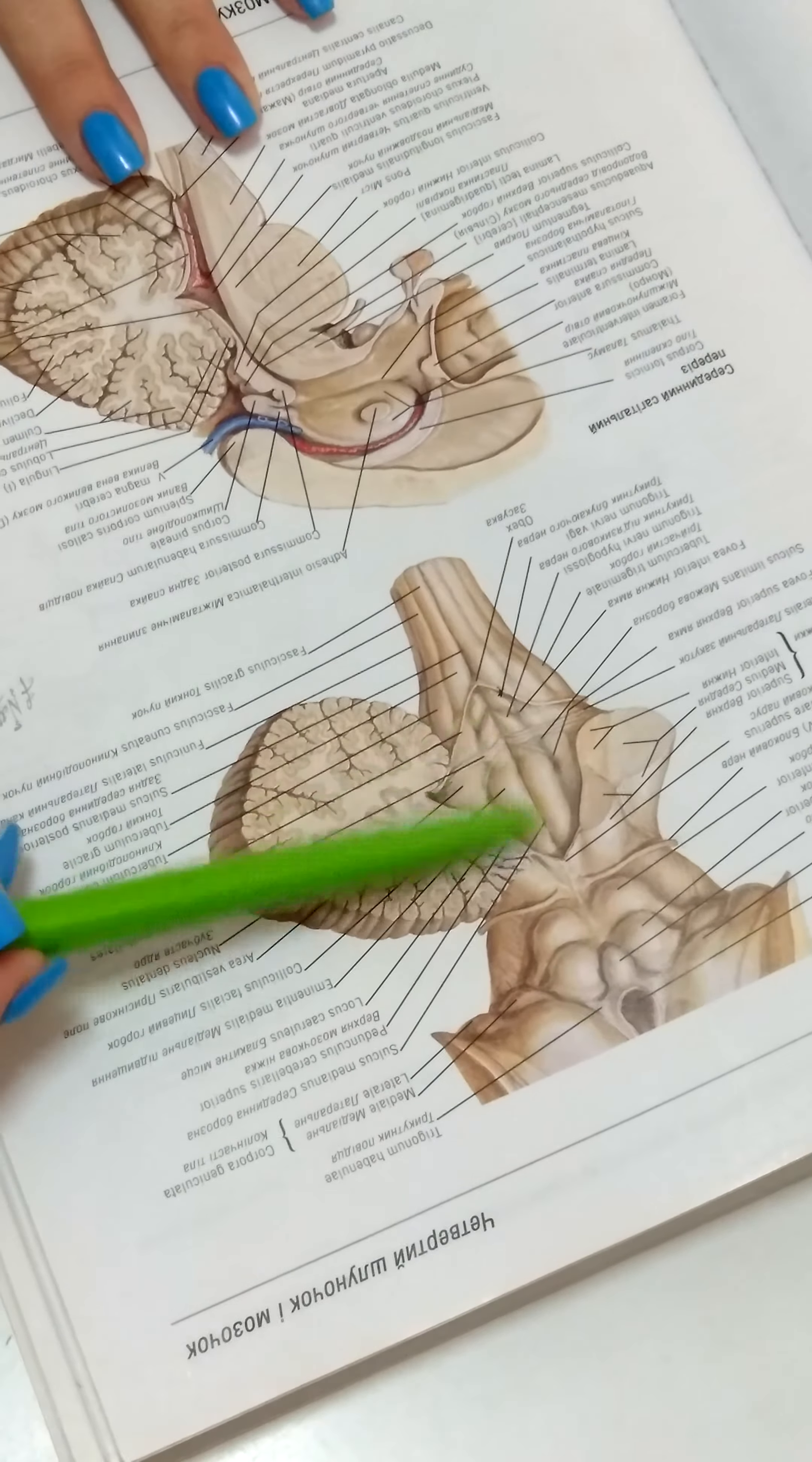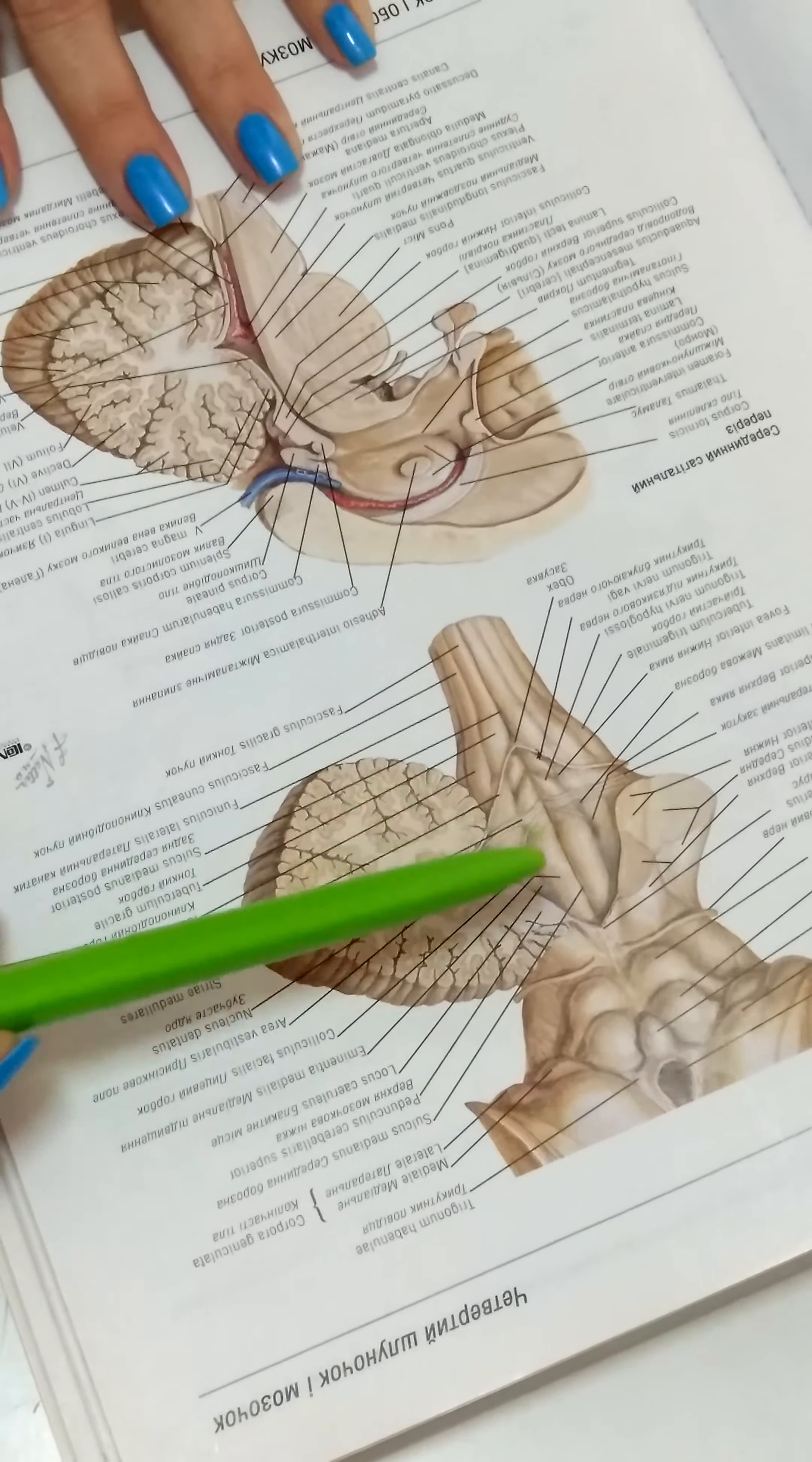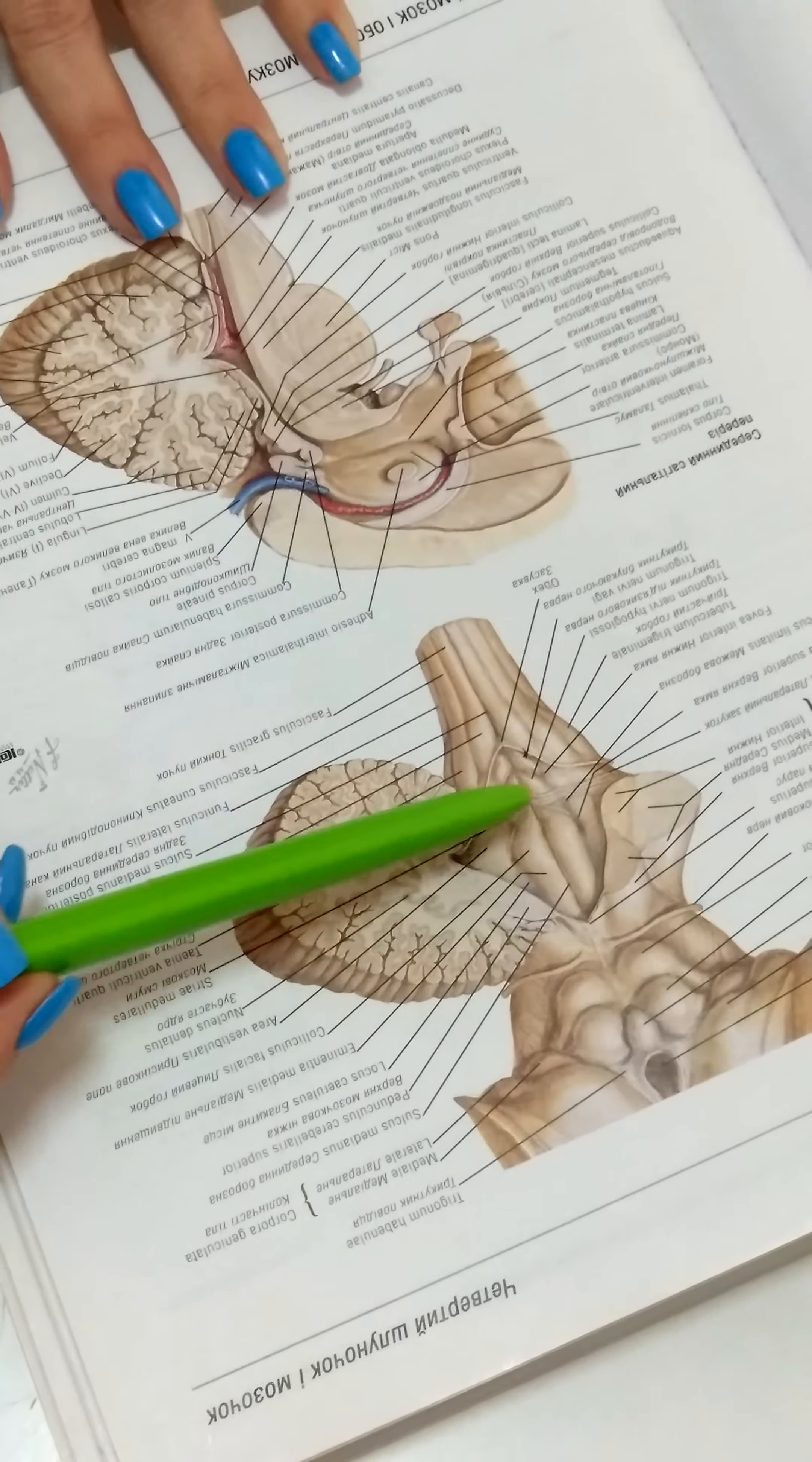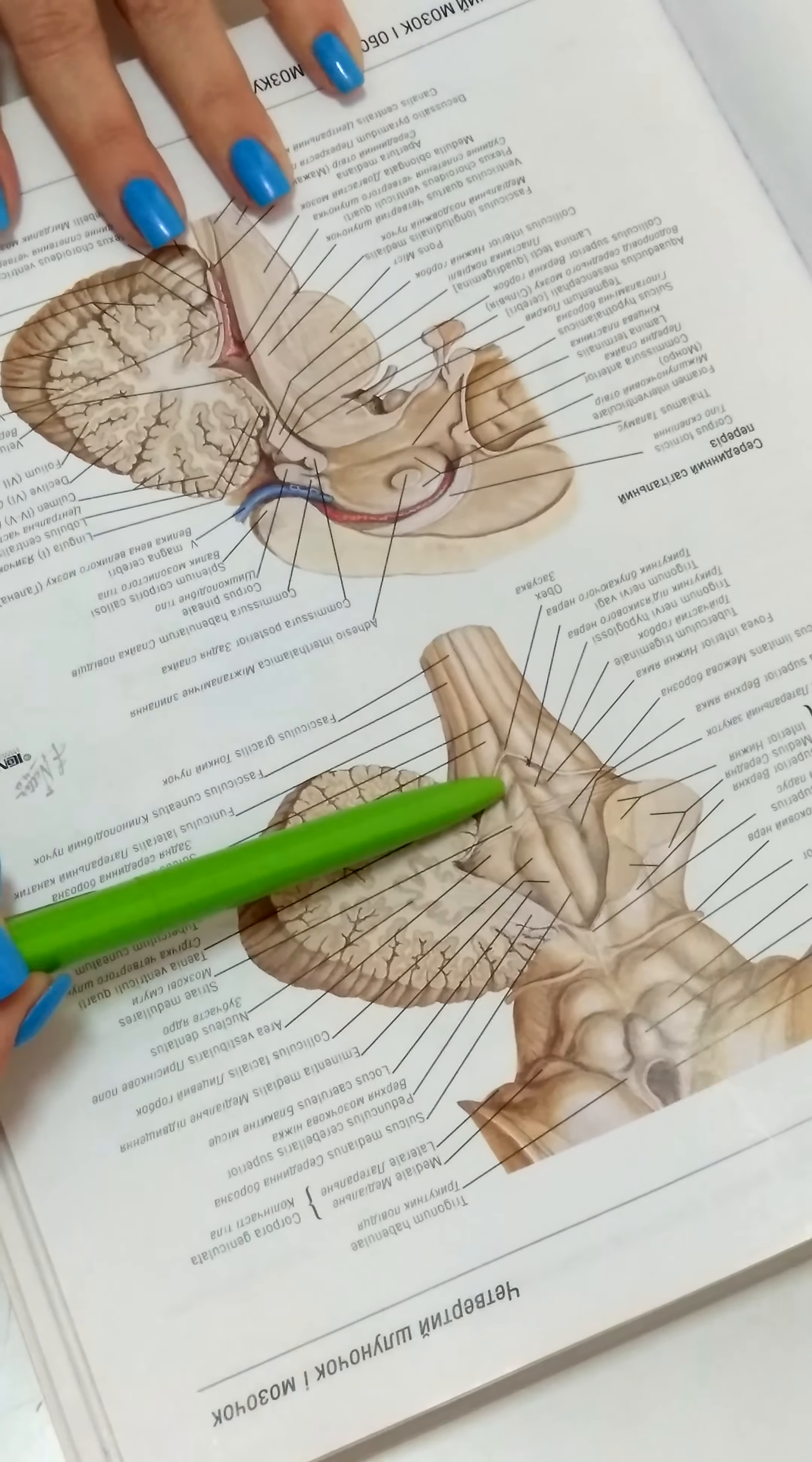Laterally from the median groove, eminentia medialis is located, which is bounded by sulcus limitans laterally. In the lower portion of eminentia medialis, there are two paired triangles: trigonum nervi hypoglossi and trigonum nervi vagi located.